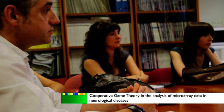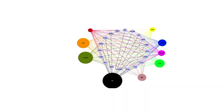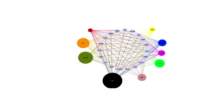Another area of our research is related to the use of cooperative game theory in the analysis of microarray data in neurological diseases. Through the application of this mathematical theory we have detected complex cooperation between the genes involved in autism. We have created an analysis platform based on this technique which we have made available free of charge to the entire scientific community.